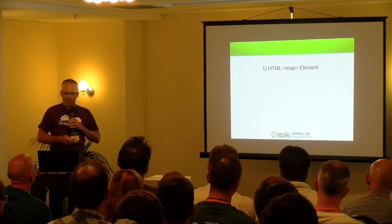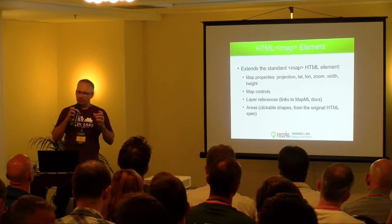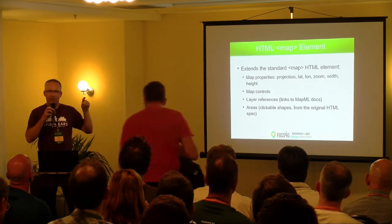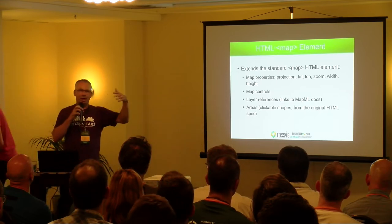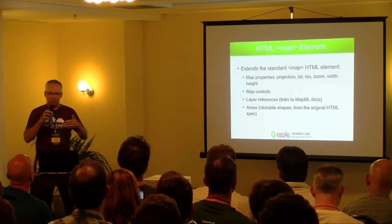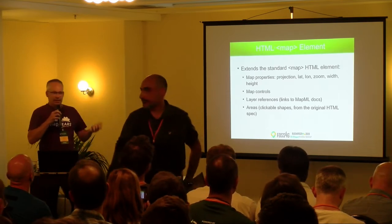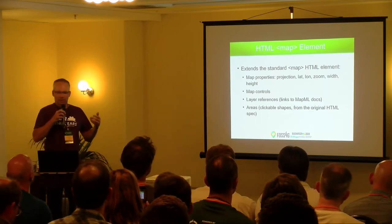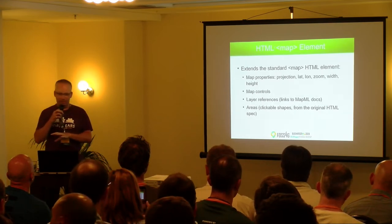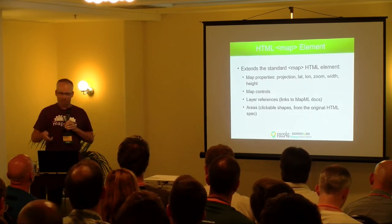On the spec itself — there are two parts. There's the map HTML element that you place in your HTML page. It's built on top of the old HTML map element that allowed clickable areas and shapes, extending it by adding new properties like projection, latitude, longitude for the initial view, zoom, width, and height. It adds the ability to add or remove map controls, layer references which are links to MapML documents, and the areas that were the original clickable shapes in earlier versions of HTML.